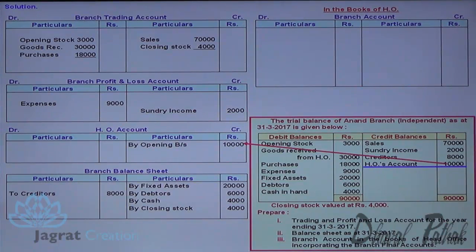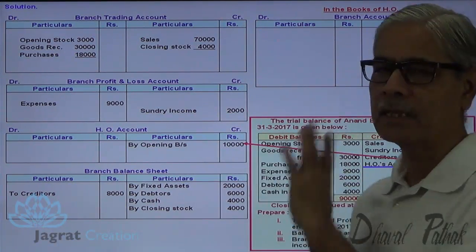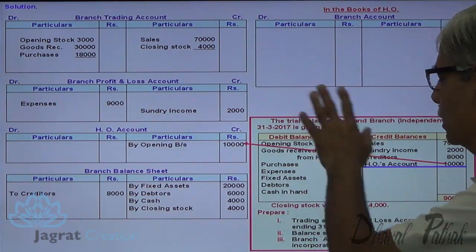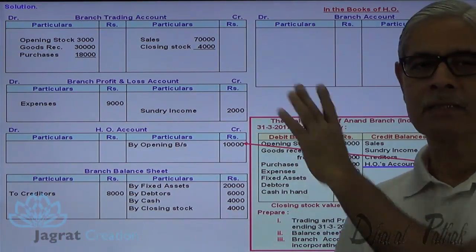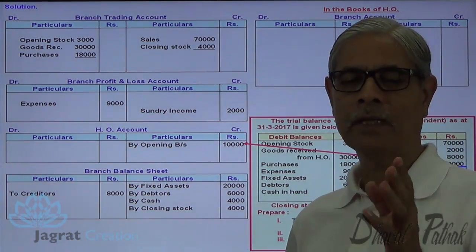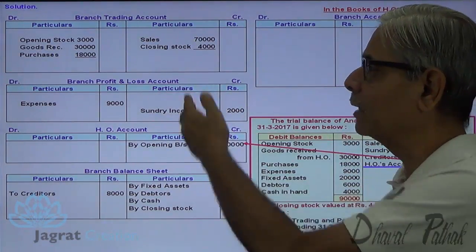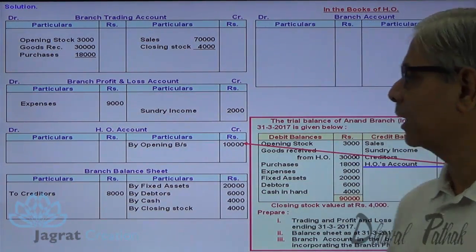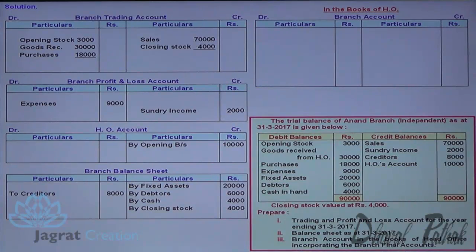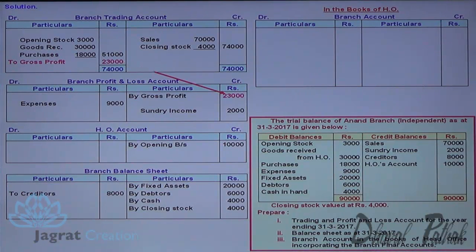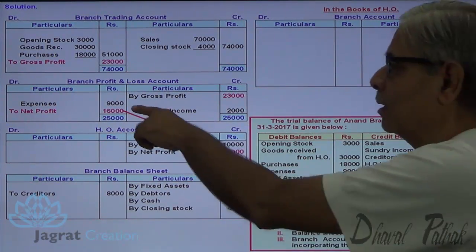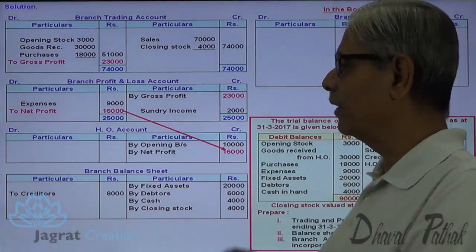HO account shows a credit balance of 10,000, recorded as a capital account with a credit balance of 10,000. This is how the adjustment and trial balance is considered in the trading and profit and loss account. Closing the trading account: 74,000 minus 51,000 gives gross profit transferred to profit and loss account. Then 25,000 minus 9,000 gives 16,000 profit.